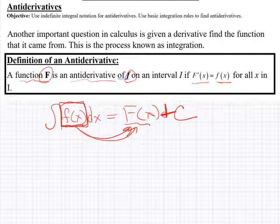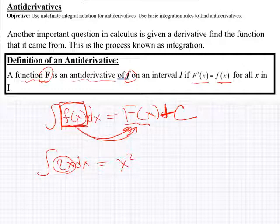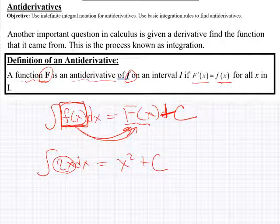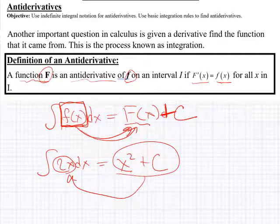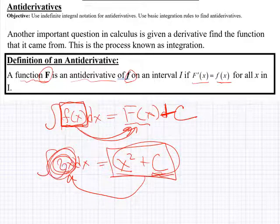Some of them are very simple. If I take the integral of 2x dx, you know that 2x is the derivative of x squared. So x squared is the integral of 2x. Now we put the plus c on there because x squared plus 1's derivative would be 2x, x squared plus 2's derivative would be 2x. So x squared plus any constant's derivative gives 2x. That's why we have c, the constant of integration, which creates a family of antiderivatives.